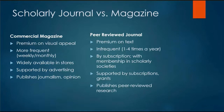Where the commercial magazine is supported and paid for by advertising, the peer-reviewed journal is supported by subscriptions, grants, or memberships to those scholarly societies. The commercial magazine can publish journalism, reportage, news, and opinion. But the peer-reviewed journal publishes peer-reviewed scholarly academic research.